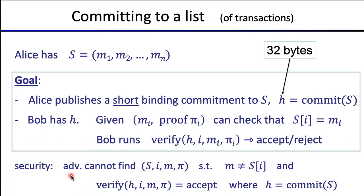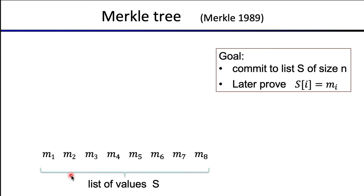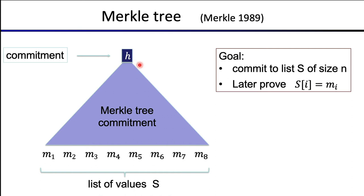The trick to commit to a set and then open only one element with a very short proof is called a Merkle tree, due to Ralph Merkle back in 1989. It's an old idea, but so important it's now used everywhere in the blockchain space. We're going to commit to a list of size n — here we'll assume only eight elements. We produce a short commitment h that's just 32 bytes, even though we might be committing to a million elements where each is a megabyte long.